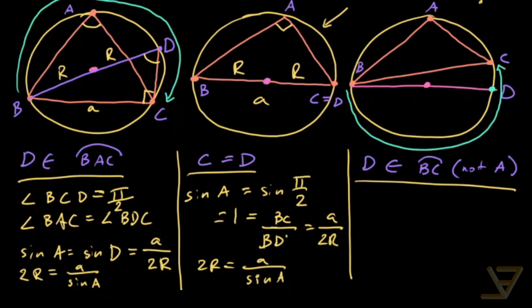Now, for the final case, what we're going to do is we're going to draw this length again. And as before, by Thales theorem, we have a 90 degree angle over here. So what we find is that sine of A, which is this angle here, is equal to sine of pi minus angle D, which is over here.